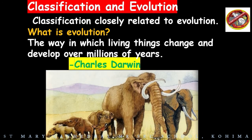Let's look at this picture of an elephant. Millions of years ago, elephants did not look like they do today. They have changed and developed over time to better survive. This is an example of the evolution of the elephant.